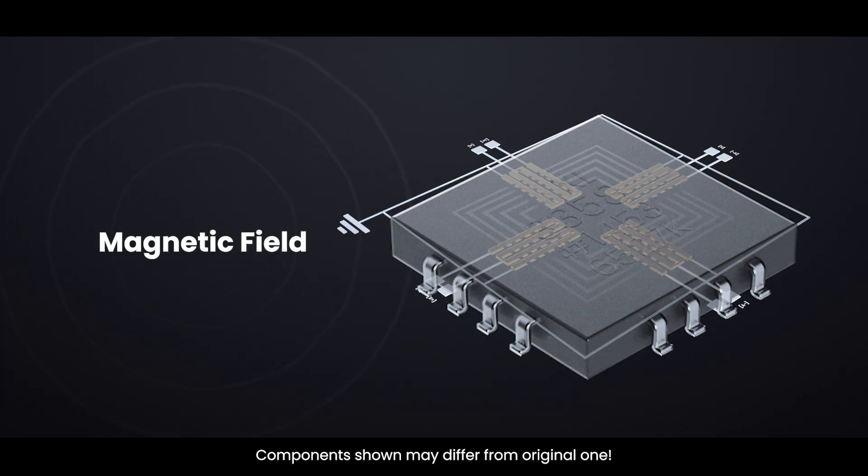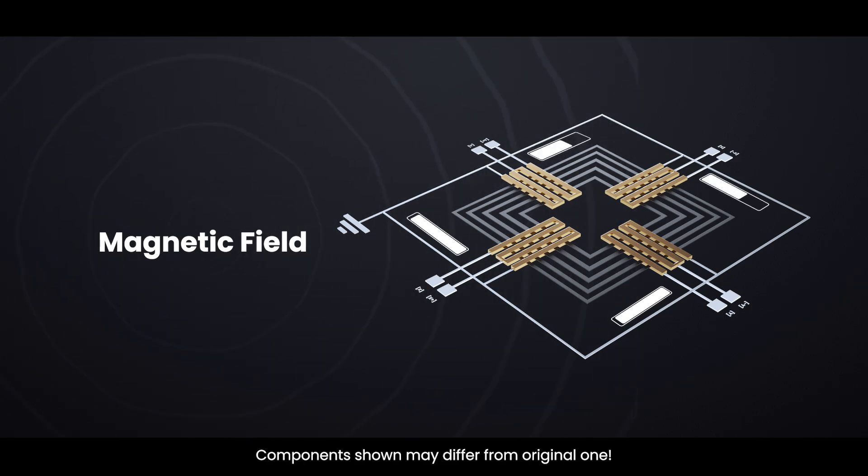When a magnetic field passes through the chip, the resistance of these strips shifts slightly, causing an imbalance in the bridge that produces a small voltage difference.